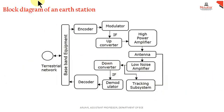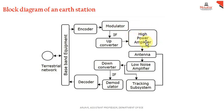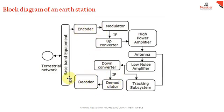This is the basic block diagram for a ground station. From the terrestrial network, there is baseband equipment that receives and transmits signals. While transmitting, it gets encoded and, like any communication system, it gets modulated and upconverted to an intermediate frequency. There it gets amplified through a high power amplifier and finally transmitted through an antenna. In the receiving section, the signal is passed to a low noise amplifier and downconverted to the IF range, then demodulated and decoded before being sent to the baseband equipment.